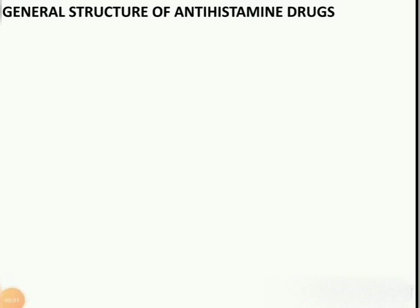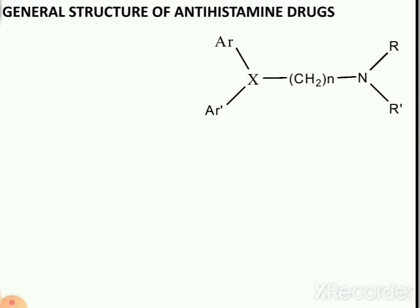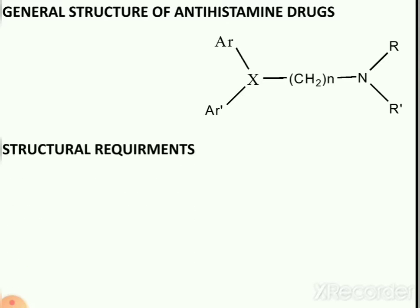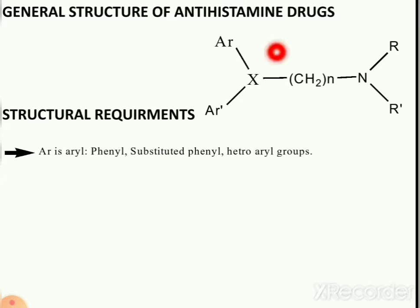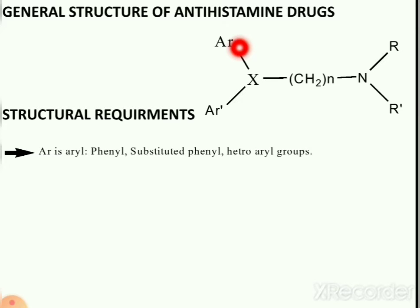Now I am going to discuss the Structure Activity Relationship of antihistaminic drugs. In this picture you can see the basic structure of antihistaminic drugs. The structural requirements include Ar substitution, where Ar stands for Aryl. Aryl substitution can be of phenyl, substituted phenyl, or heteroaryl group.